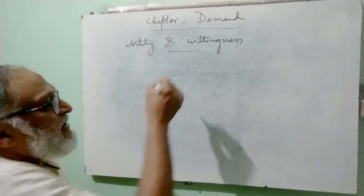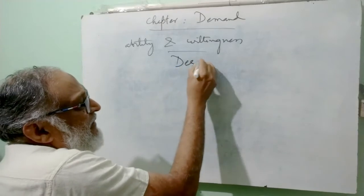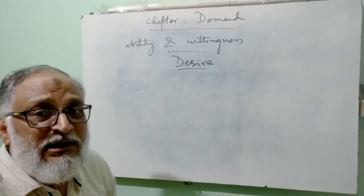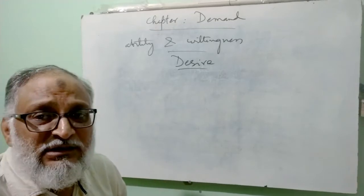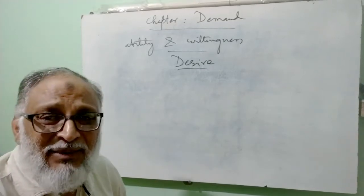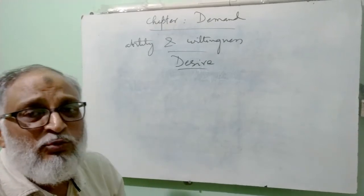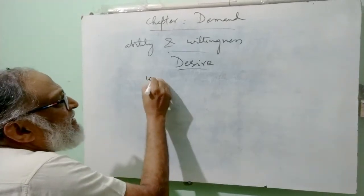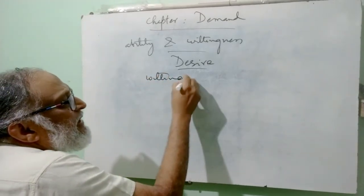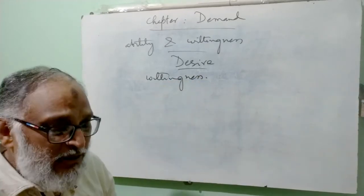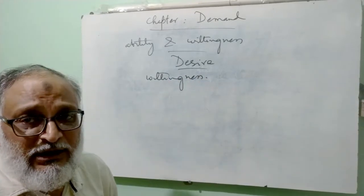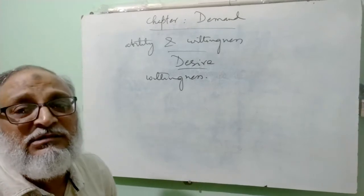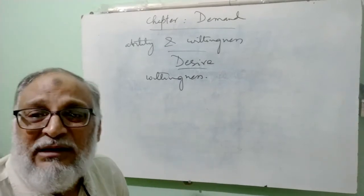Otherwise it could be only desire. Meaning it could be our wish or longing. But if we cannot afford it, if we don't have the capacity to buy it, if we don't have the money, then it will remain only a desire. Desire only contains willingness — meaning I want to buy it, it's my dream, it's my wish to get that thing — but in no way can I buy it, so it remains my desire.